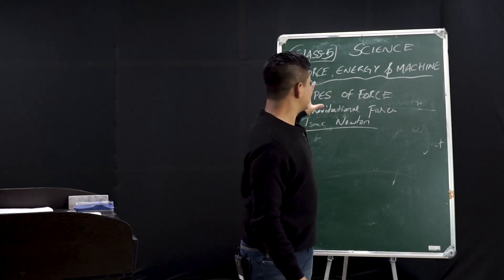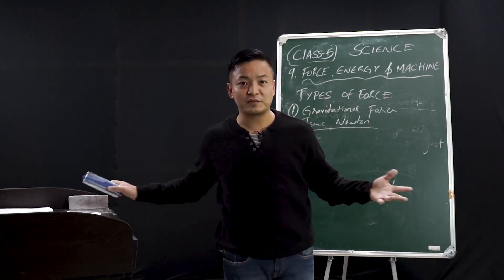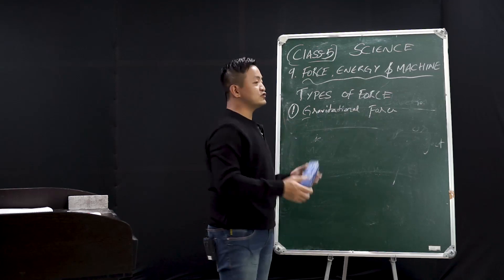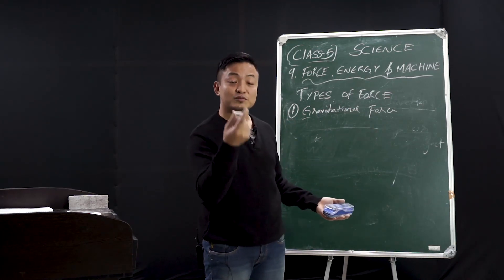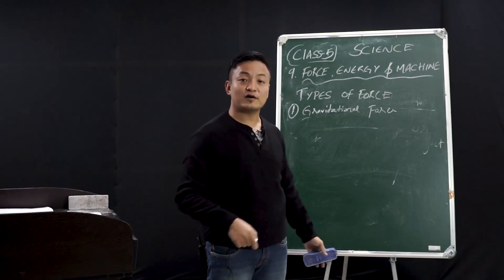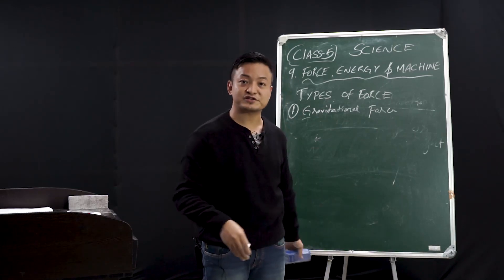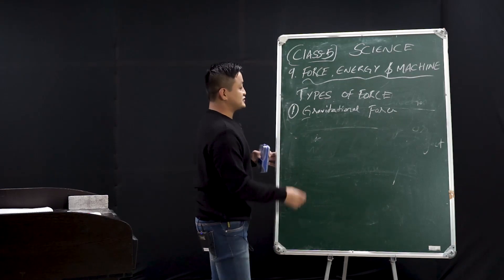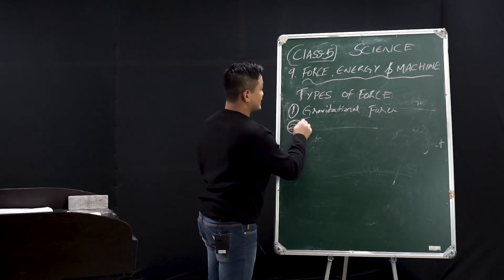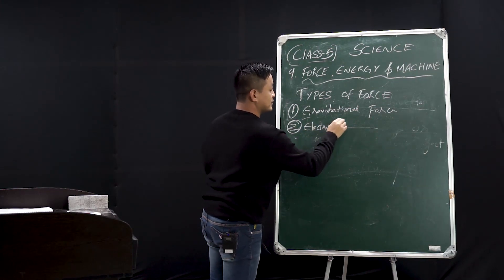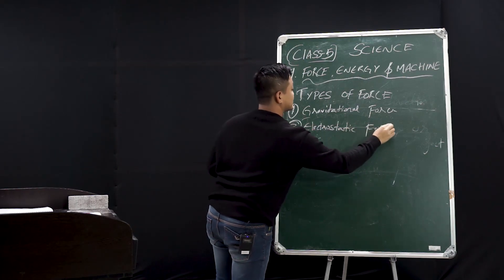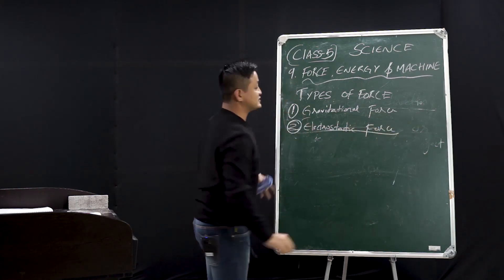Gravitational force — anything if you try, if you jump, or if you throw any object, it will fall towards the ground, because there's an attraction — gravity. Now let's talk about the second type of force, which will be electrostatic force.